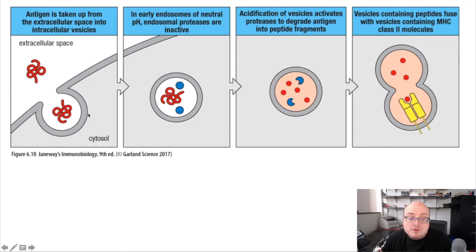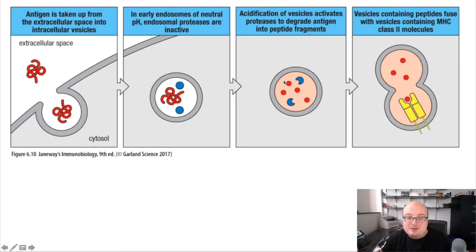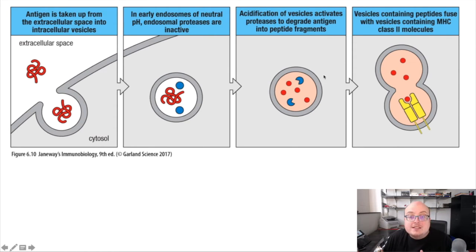These endosomes normally have a neutral pH because they are just full of extracellular fluid. But through the process of acidification, this activates proteases which are inside of endocytic vesicles. And these proteases degrade the extracellular antigen into smaller peptide fragments. So instead of going through the ubiquitin proteasome system, exogenous antigens are broken down by protease enzymes within the endosomal compartments, into smaller peptide fragments.